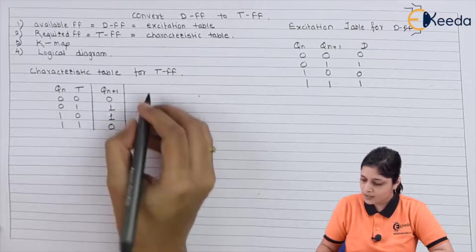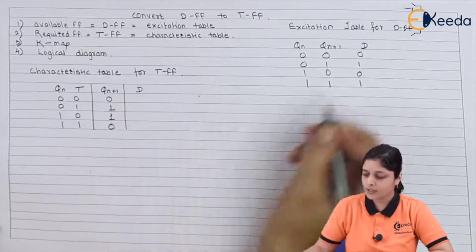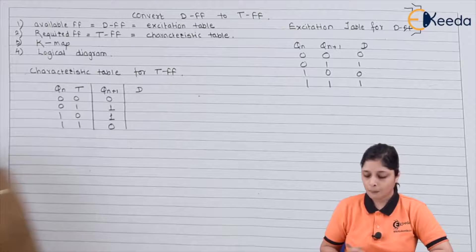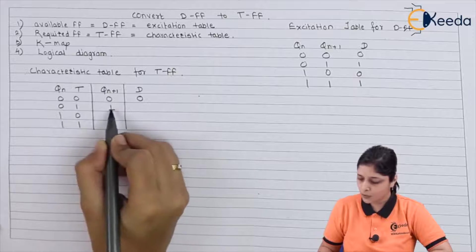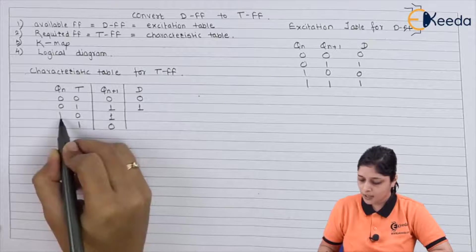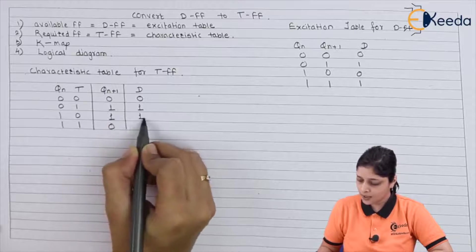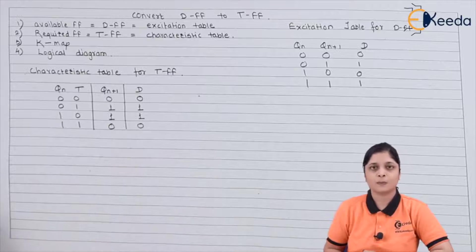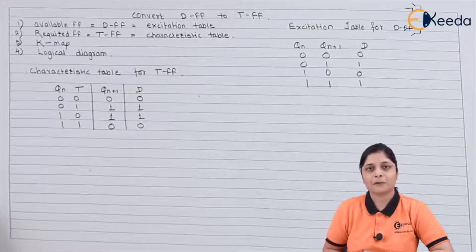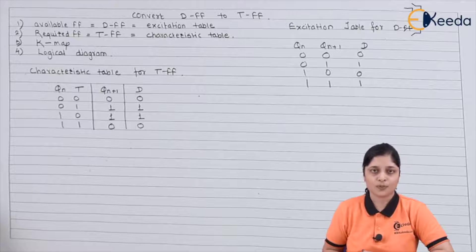Next process is to append the table with D. You have to write the D values: 0, 1, 1, 0. In this way, you have to complete the table for the conversion process. The next step is to draw the K-map.